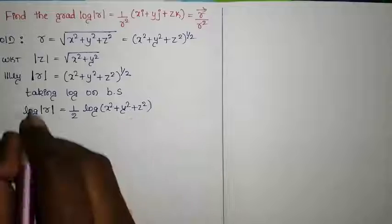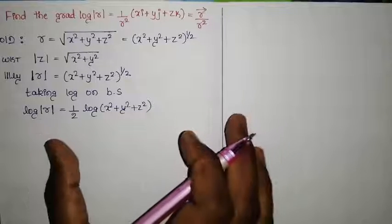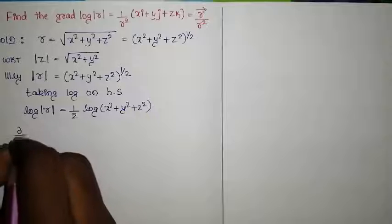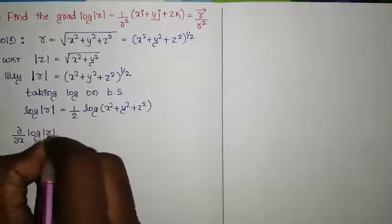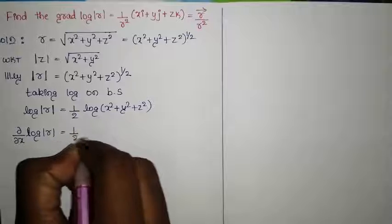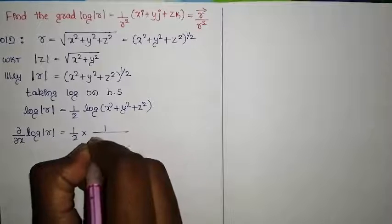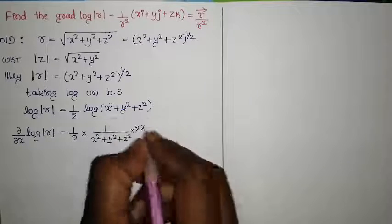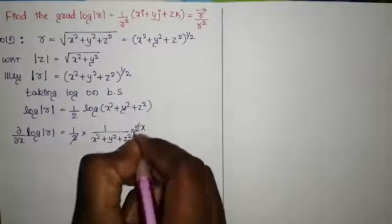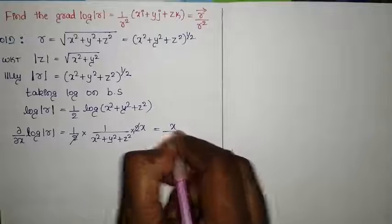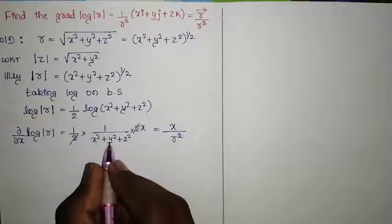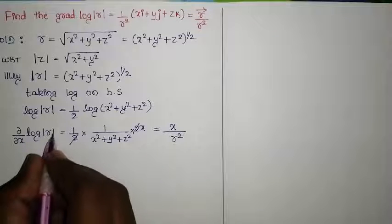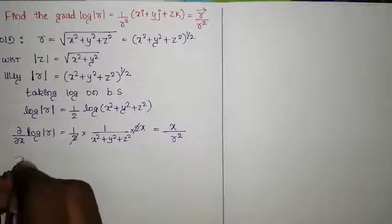Now differentiate this partially with respect to x, y, and z. We get ∂/∂x of log|r| equal to 1/2 into 1/(x² + y² + z²) into 2x. The 2s cancel, giving x divided by r squared, since x² + y² + z² equals r².